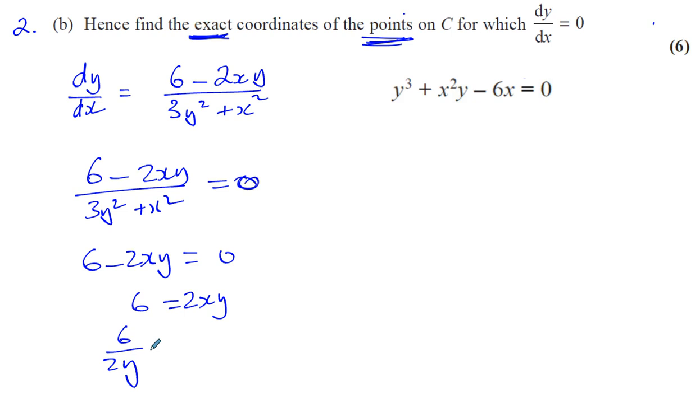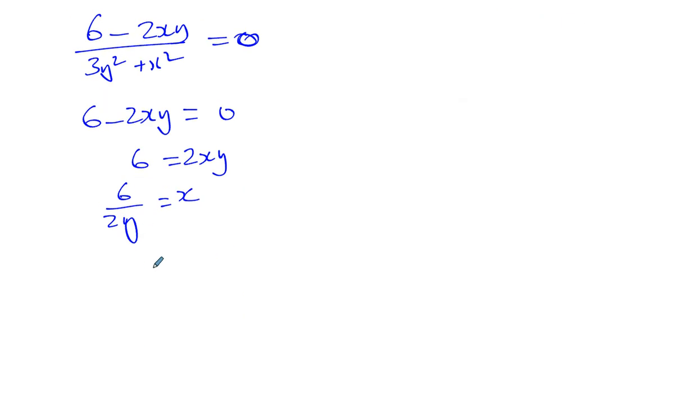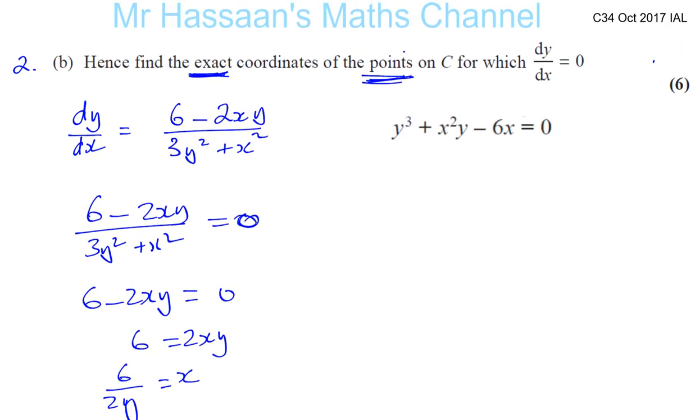You have 6 over 2y equals, actually let's divide by 2x instead. So you have x equals 6 over 2y, which gives you 3 over y equals x.